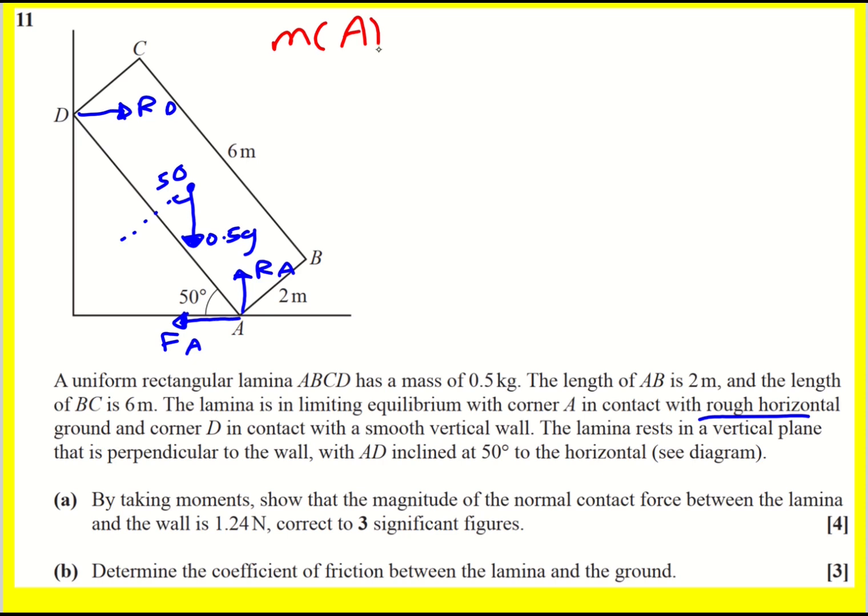So that's set up a bit like you would with a rod normally. But now we need to consider the moments, and we need to really consider the weight in two different directions. Moments at A. It's said to find basically the normal reaction between the lamina and the wall, so we need to find RD. That's one reason why we're going to do it at A. But another reason we do it at A is because it eliminates friction in the normal reaction. So to start with, I've got alternate angles here because of this Z. So this here is 50. I'm going to get a clockwise moment coming from RD.